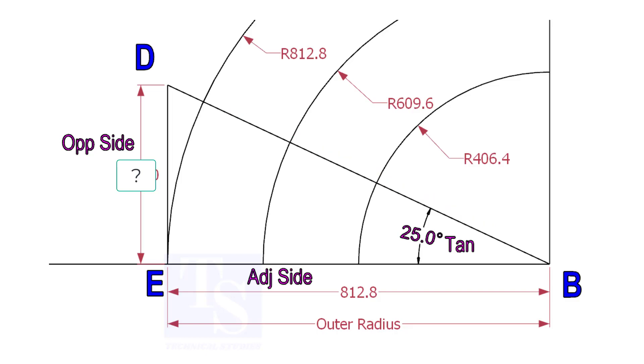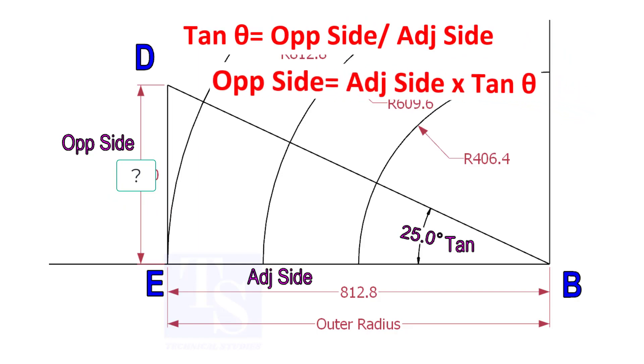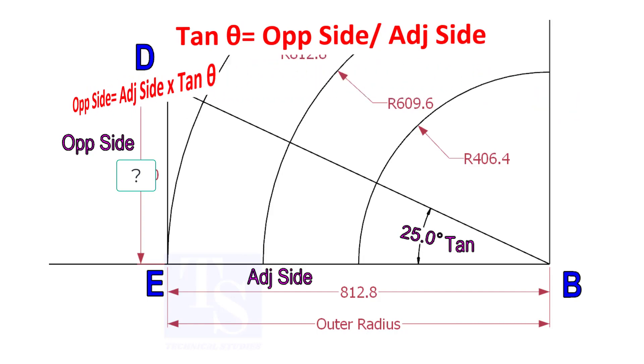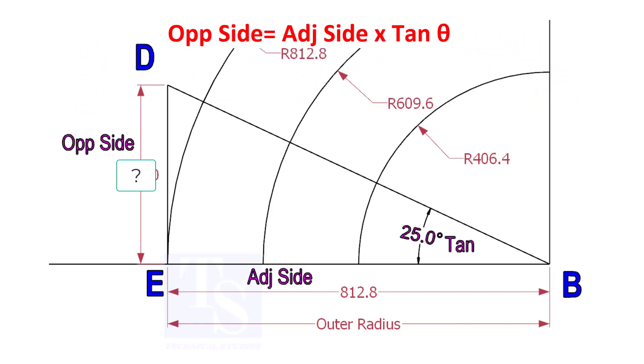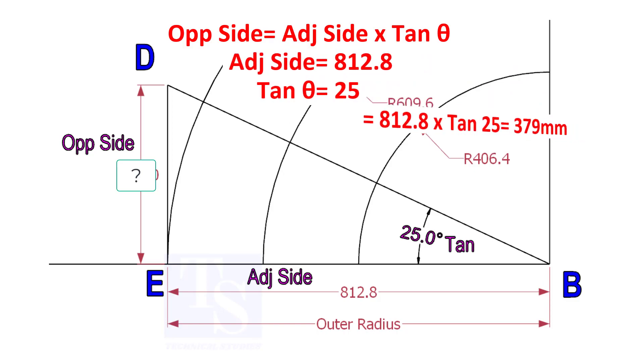To draw the line DB, we need to know the length of the line ED. To calculate ED, we need to apply the formula: tan-theta equals opposite side divided by adjacent side. Opposite side equals adjacent side multiplied by tan-theta. 812.8 into tan-25 equals 379 millimeters.